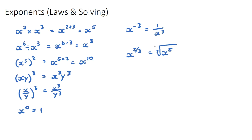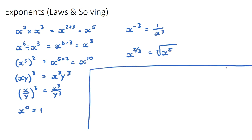I'm going to do one example question. In IB questions they often ask you to solve for an unknown value. For example: (1/3) to the power of (5 minus 4x) equals 27 to the power of (2x minus 3). We need to find x, and guess-and-check would take too long — so we need our exponent laws.